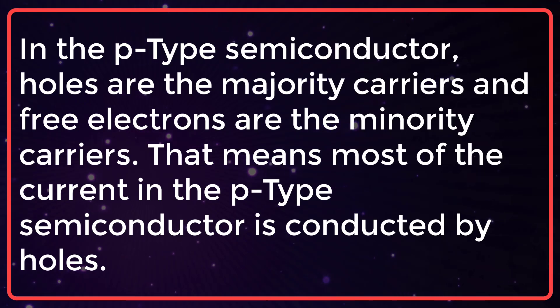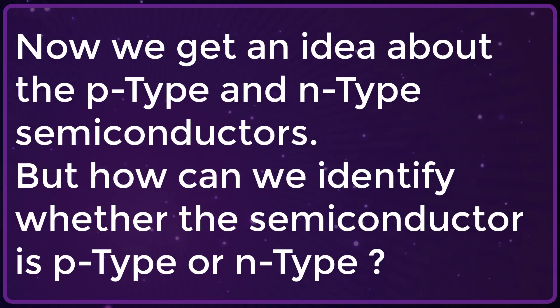In the P-type, holes are the majority carriers and free electrons are the minority carriers. That means most of the current in the P-type is conducted by holes. Now we get an idea about the P-type and N-type semiconductors. But how can we identify whether the semiconductor is P-type or N-type?